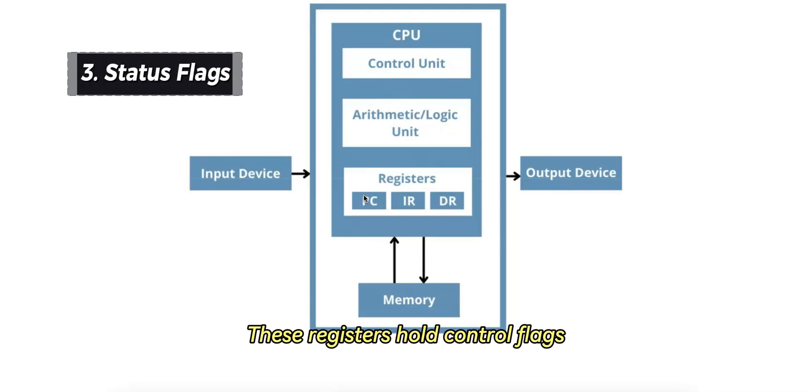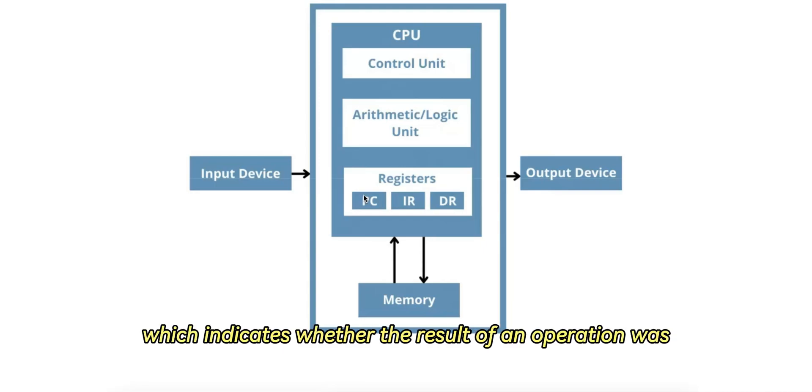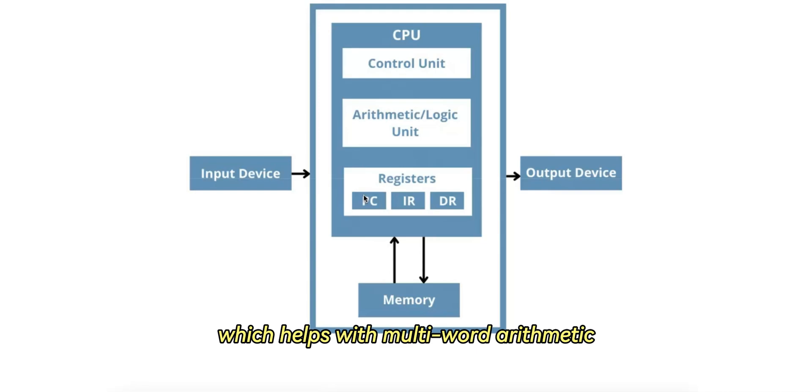And number three is status flags. These registers hold control flags that help track conditions from the CPU's operations, such as zero flag, which indicates whether the result of an operation was zero, sign flag, which indicates if a result is negative, and carry flag, which helps with multi-word arithmetic. These flags are crucial for branching and decision-making within programs.